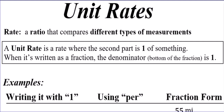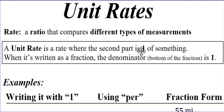Go ahead and follow along with me here as I read this out loud. Rate is a ratio that compares different types of measurements. A unit rate is a rate where the second part of the ratio is one of something. You'll see what I mean when you look at some examples. When it's written as a fraction, the denominator, which is the bottom of the fraction, is the one.